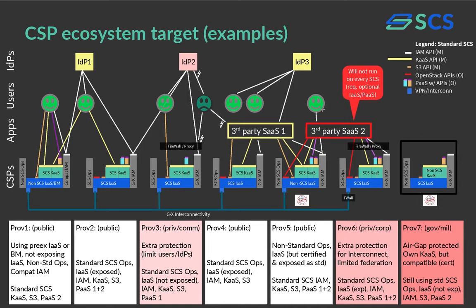This is all provided by all providers, and this makes sure that applications built on top of these standard APIs really can run without any change and can be automated and deployed without any change on all of those platforms. This applies, for example, to what's depicted as the third-party SaaS application number one on the apps layer, because it really consumes the standard interfaces only. We also have a set of optional standards — we believe there will be providers that want to expose the OpenStack APIs, having OpenStack as some of the building blocks below the Kubernetes-as-a-service platform.